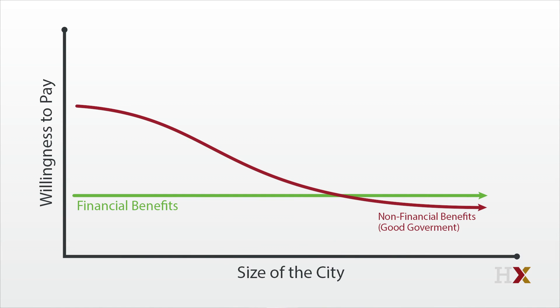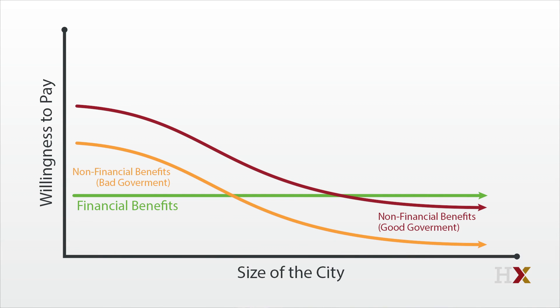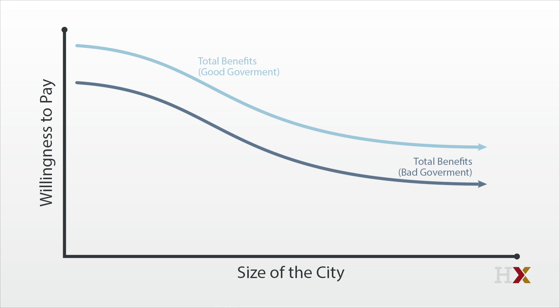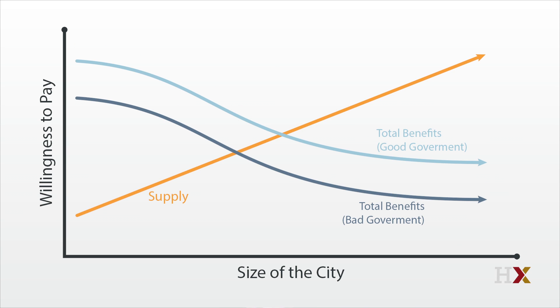Better governments are better able to deal with these downsides of density. Singapore, for example, manages to deal with traffic congestion through electronic road pricing. So we can draw two lines for quality of life — both the same when population is low — but one line, reflecting the better governed city, falls less than the other as city population increases. Add these to the same fixed wage, and we get two demand curves: one in which demand falls slowly with city population, and the other in which demand falls quickly. We add in a supply of space in the city, and we see the impact of good government on city prices and city size. The better governed city has the higher demand curve — it strikes the supply curve further out, so that population is higher and prices are higher too. As city government improves, the city expands and its prices rise.